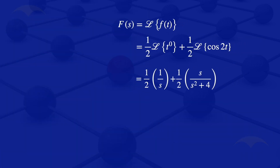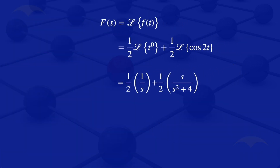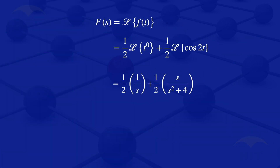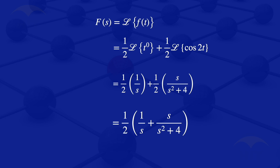So the Laplace transform of cosine squared t is one half multiplied by 1 divided by s, plus one half multiplied by s divided by s squared plus 4. The one half is common to both terms, so we factor it out, giving us one half multiplied by the quantity 1 divided by s plus s divided by s squared plus 4. That is the Laplace transform of cosine squared t.